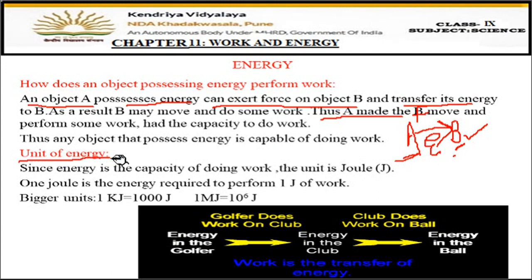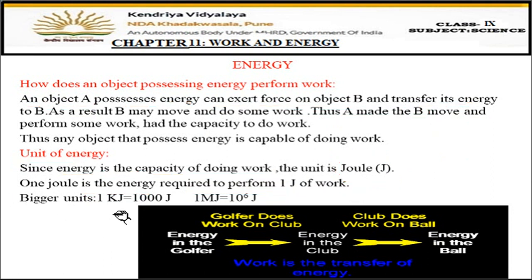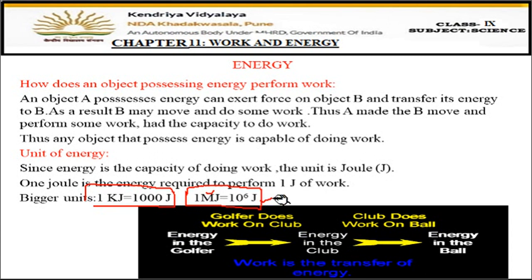The unit of energy is also Joule — the same as the unit of work — represented by the capital letter J. One joule of energy is the energy required to perform one joule of work. There are also larger units: one kilojoule equals 1000 joules, and one megajoule equals 10 to the power 6 joules.